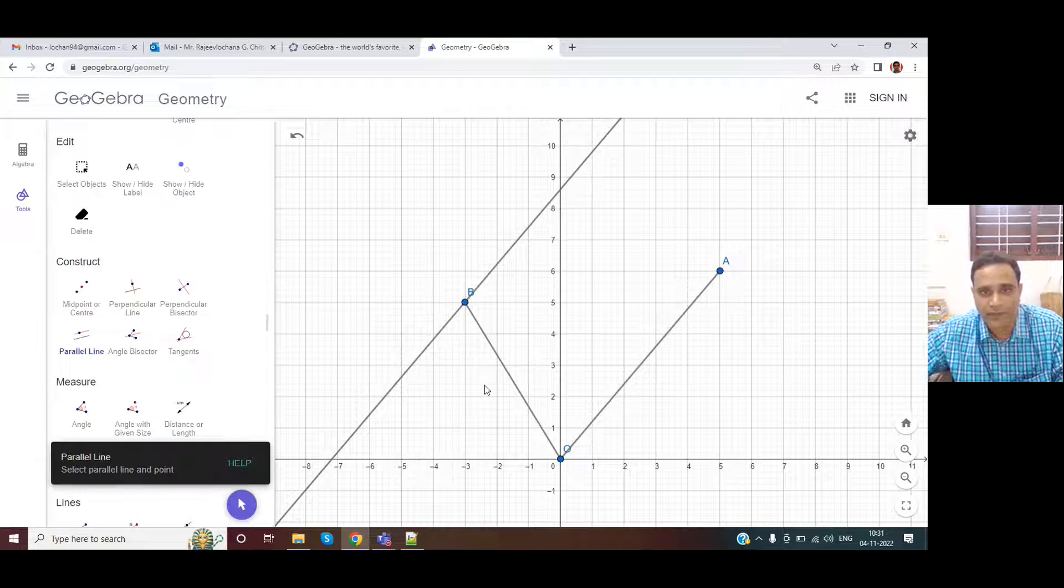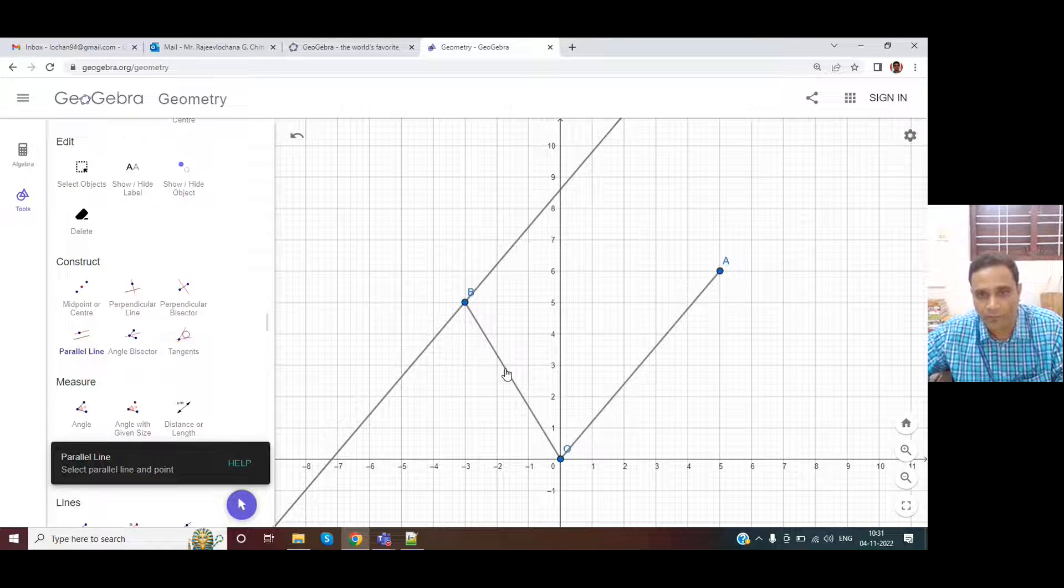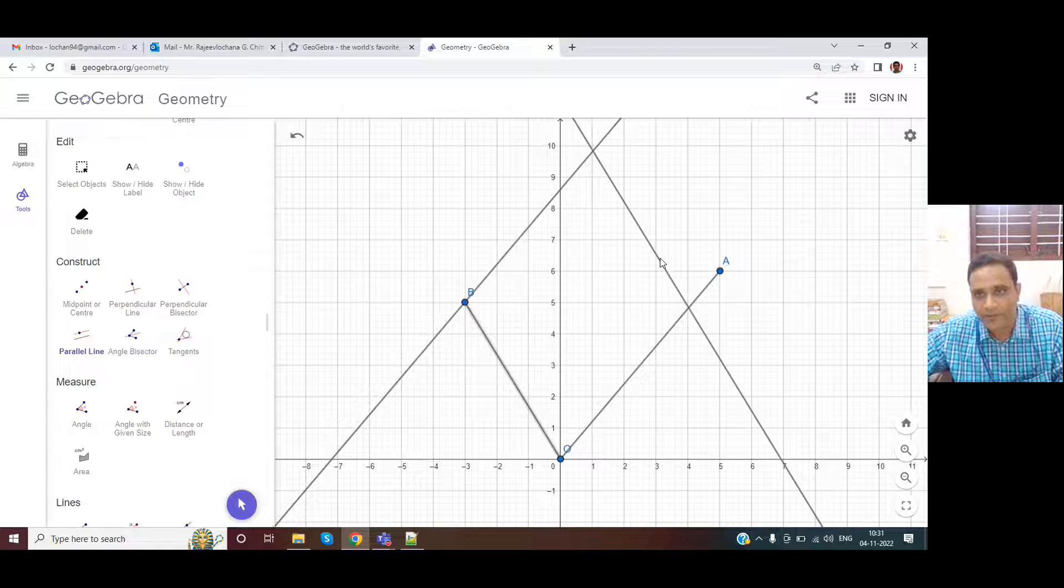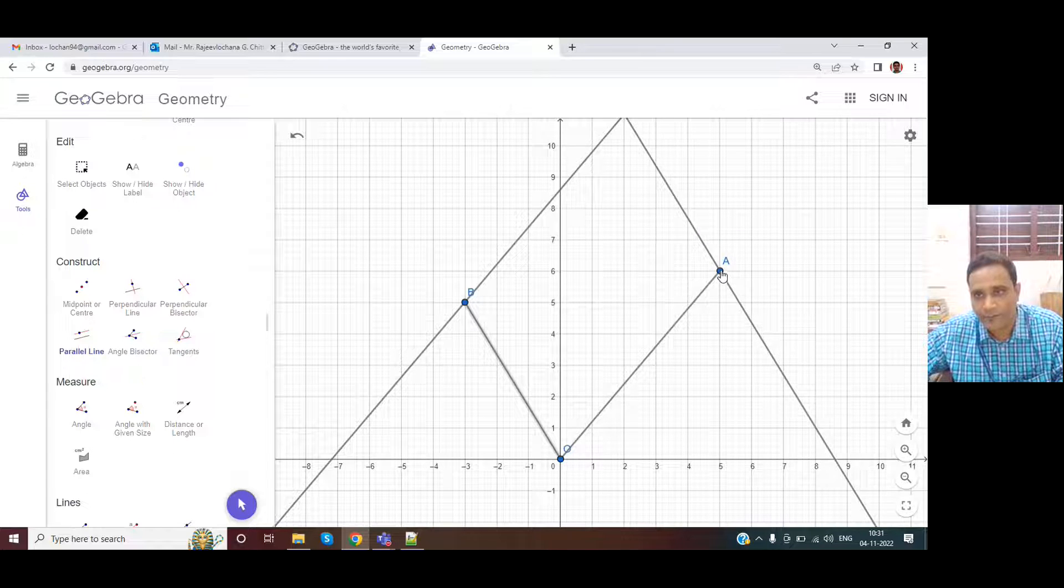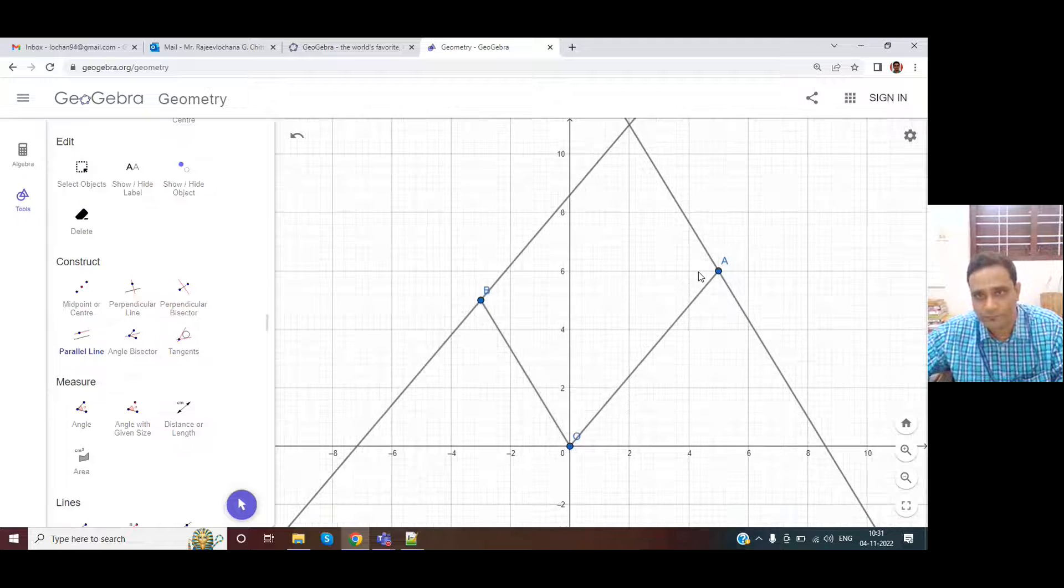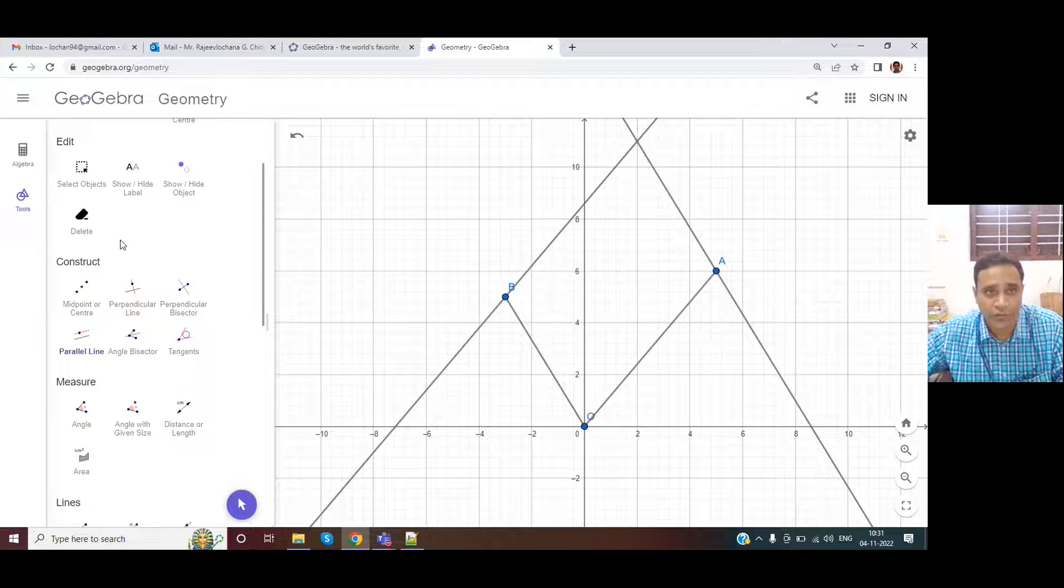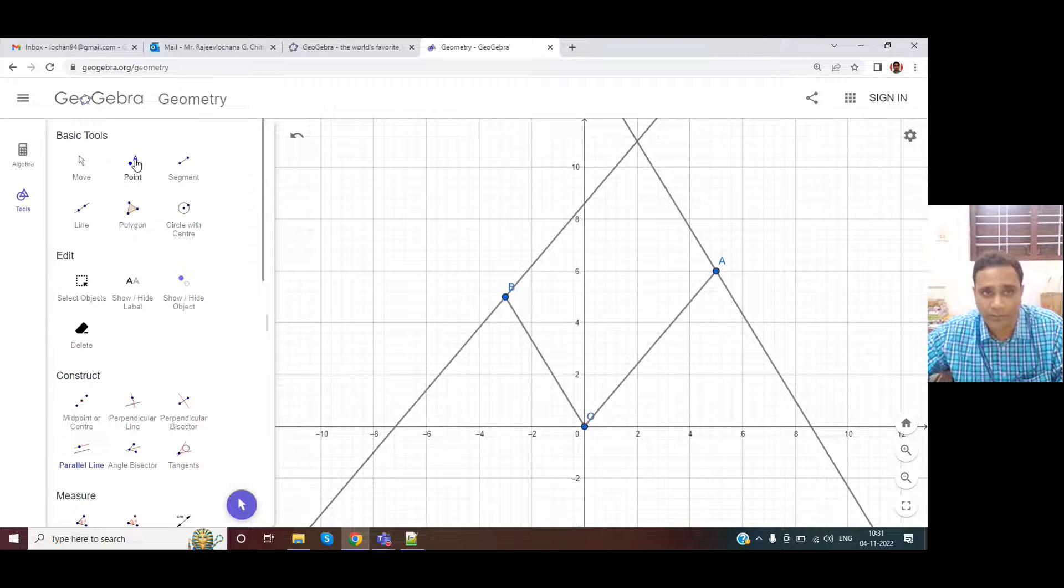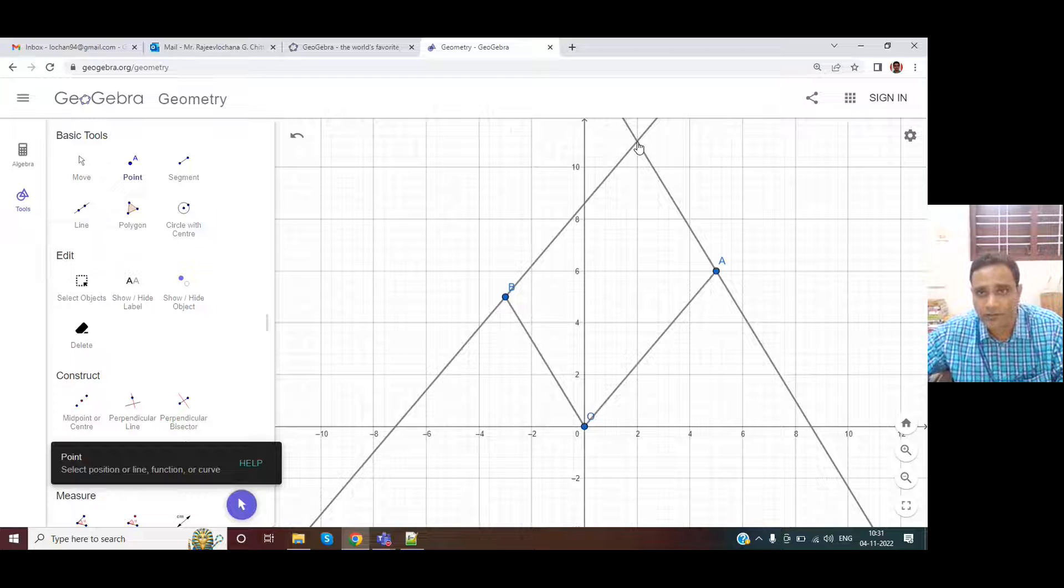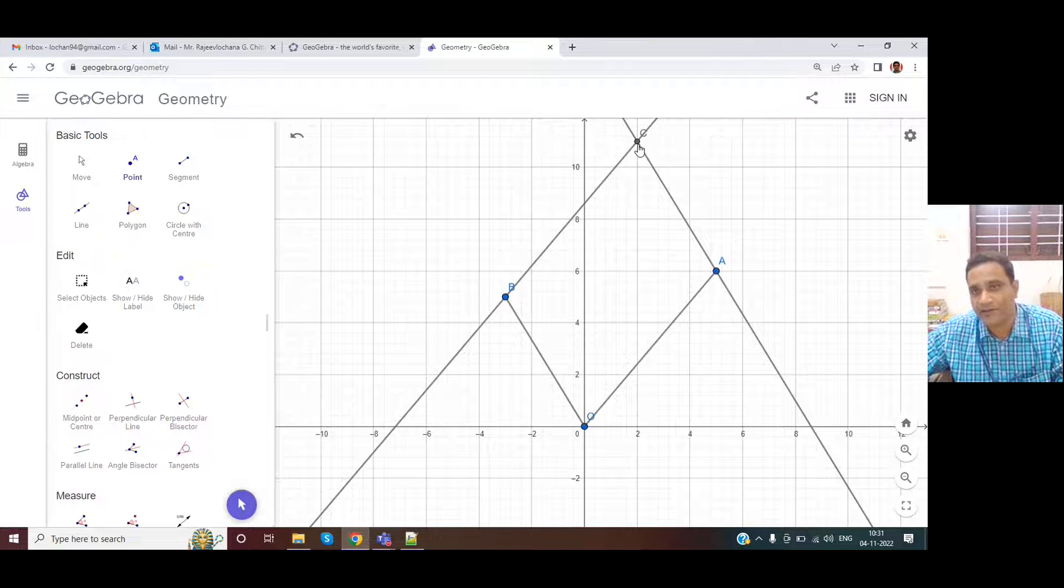Similarly, we want another parallel line of OB passing through point A. You move the mouse on top of A and leave it. So the intersection point, what you have there is important for us. How do you get the intersection point? Select point command and click there. So that is the intersection point.